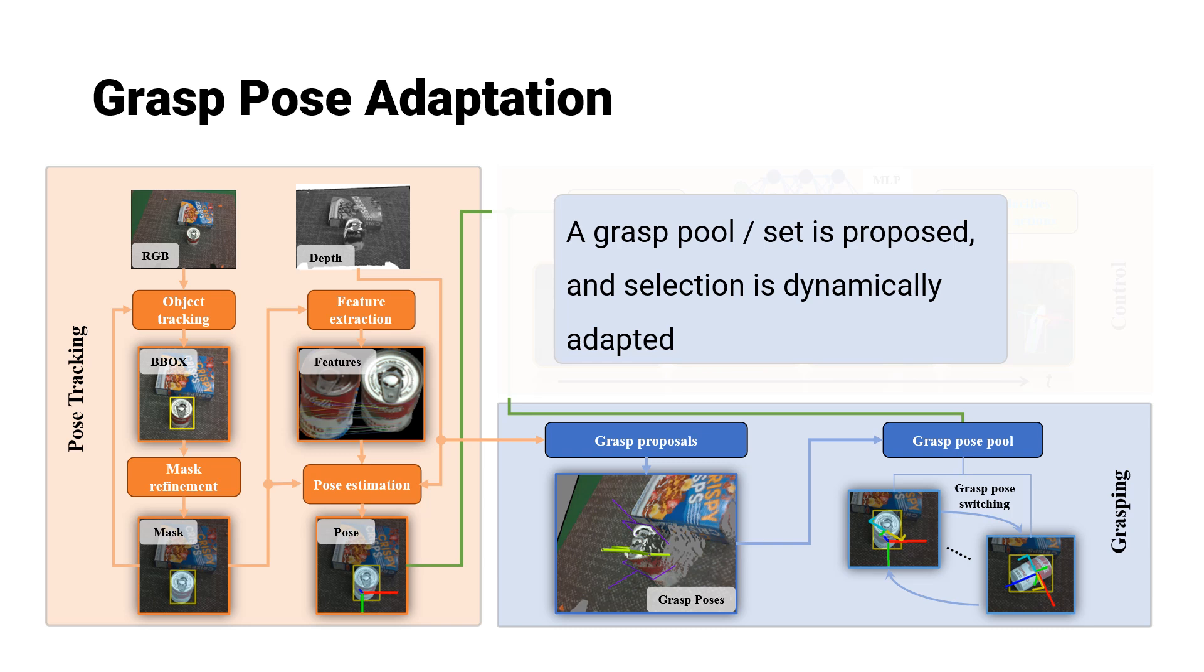The grasp pose pool is a repository that stores multiple grasp candidates ranked by their respective grasp scores. The robotic system aims to approach the selected grasp pose, the choice of which may dynamically change based on its accessibility as determined by a heuristic function.